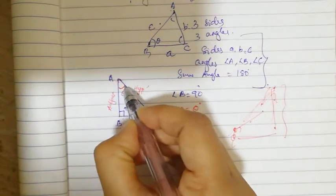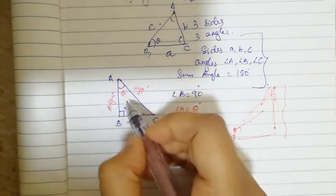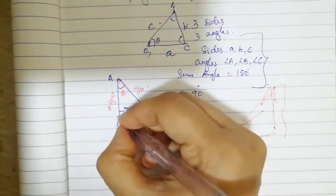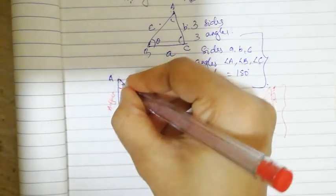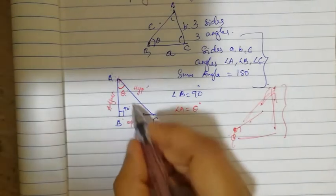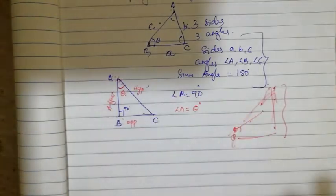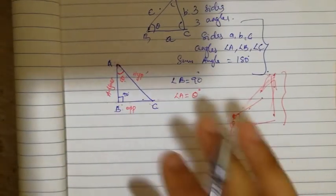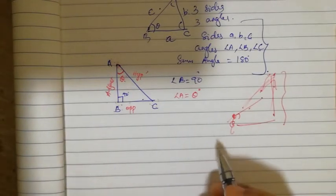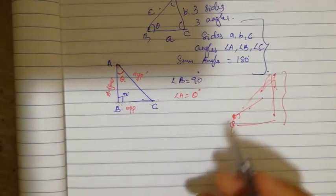Taking angle A as theta, the side AB is the adjacent side of theta, and BC is the opposite side of angle theta, and AC is the hypotenuse. From here, some basic important identities we want to study.